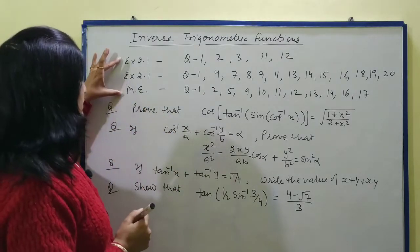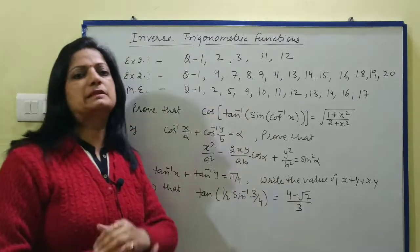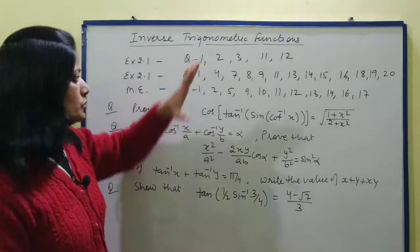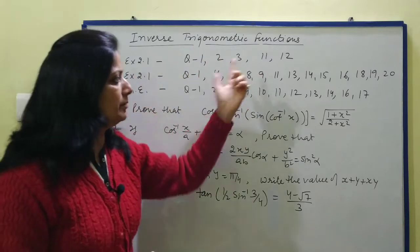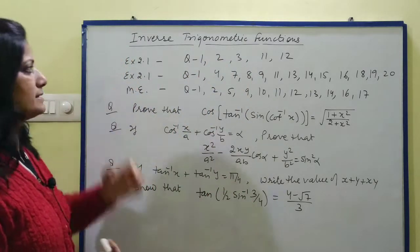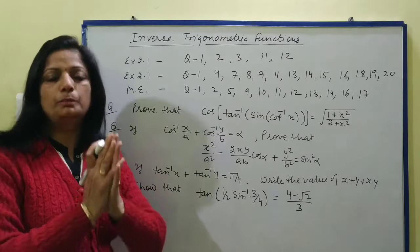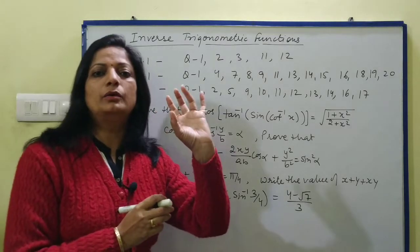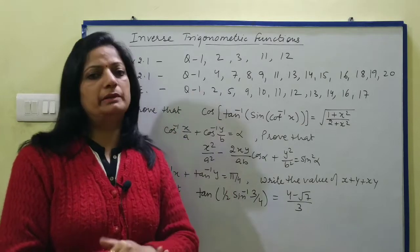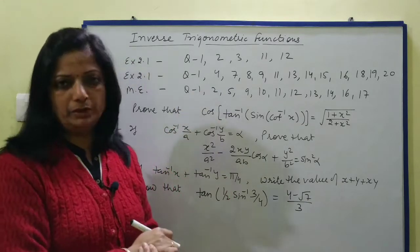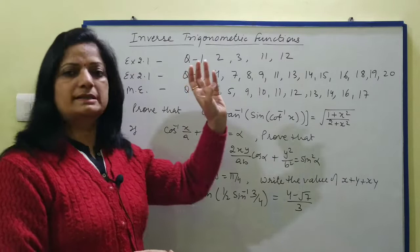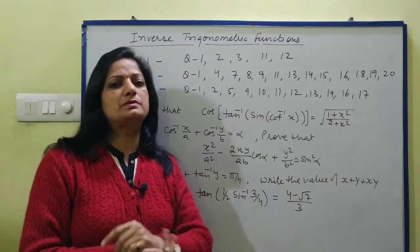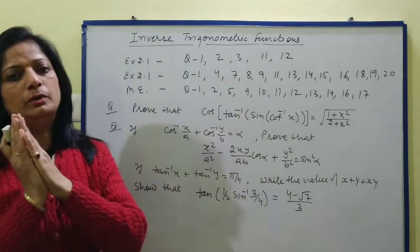There are three exercises: 2.1, 2.2, and a miscellaneous exercise. The main questions we have marked. The first exercise is principle value based, so you have to keep your attention. Sine, tan, or cosec - principal value is minus pi by 2 to pi by 2 range, and cos, sec, and cot, those three principal values are between 0 to pi.